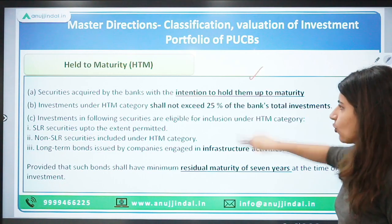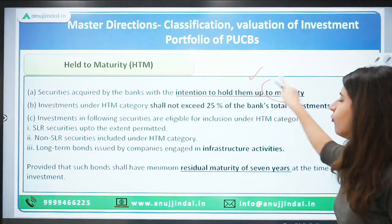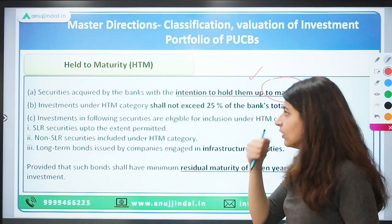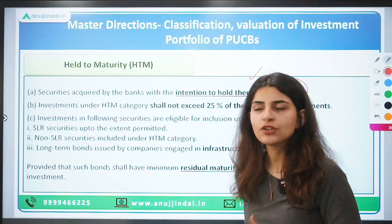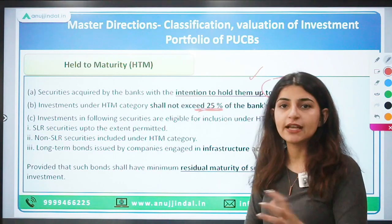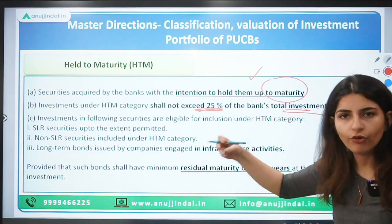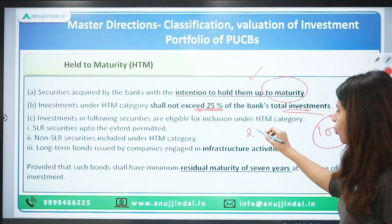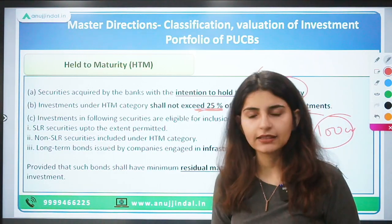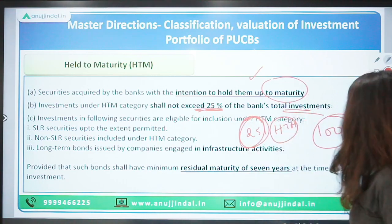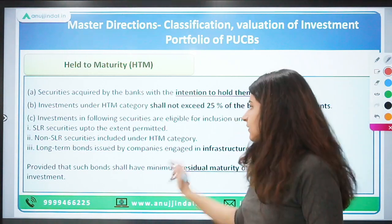Under the HTM category, securities are acquired with the intention of holding them until maturity. The investment under the HTM category shall not exceed 25 percent of the total investments made by the UCB. So if total investment is 100 crore, not more than 25 crore shall be in the HTM category. However, this 25 percent limit can be breached under certain conditions.